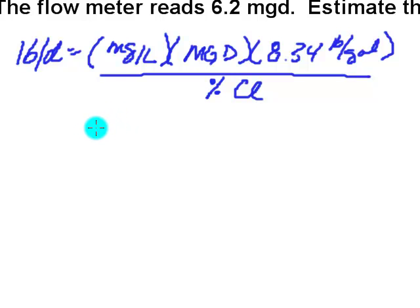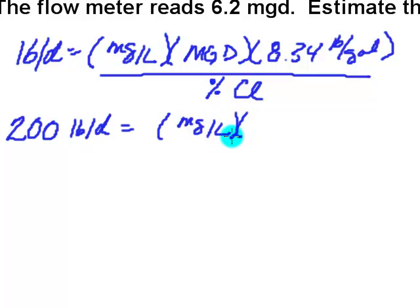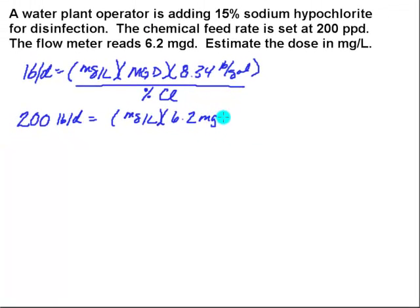So let's start plugging in what we know. They gave me the actual feed rate, we know that this is 200 pounds per day. Milligrams per liter is unknown. The flow rate is 6.2 mgd. We're going to multiply that by our conversion, 8.34 pounds per gallon.